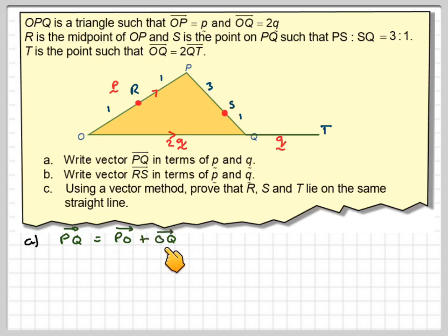Now, you need to write this bit down first. It's very important that you do. Now, we're going against the arrow here, so it'll be minus p plus 2q. And normally, we will write that as 2q minus p. We'll just swap these over.